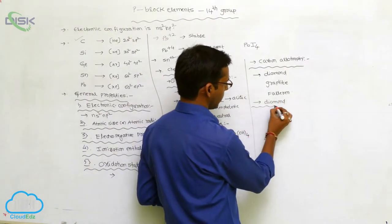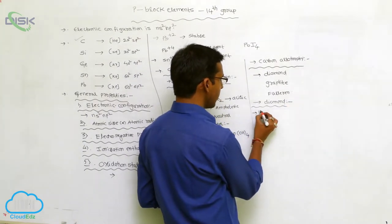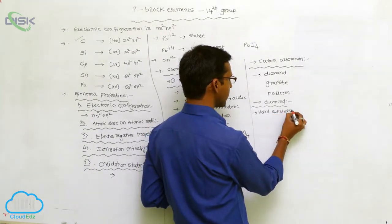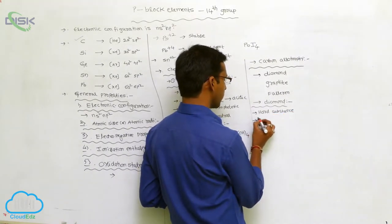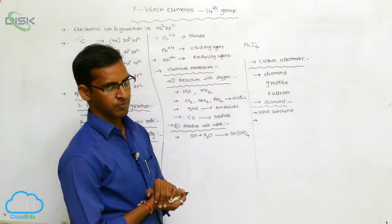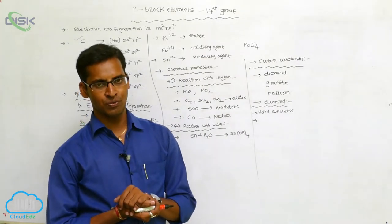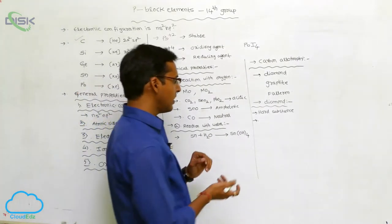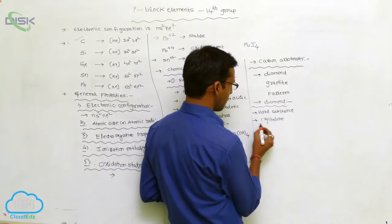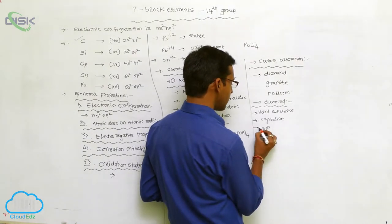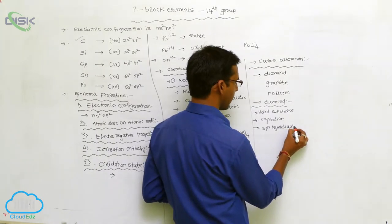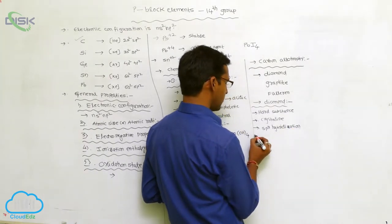Diamond is a hard substance and is an example of crystalline allotropy. Diamond undergoes sp3 hybridization.